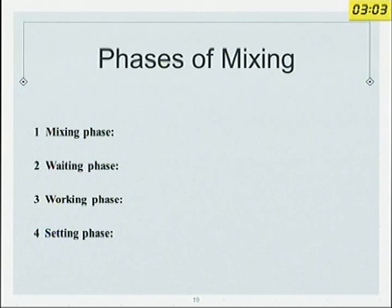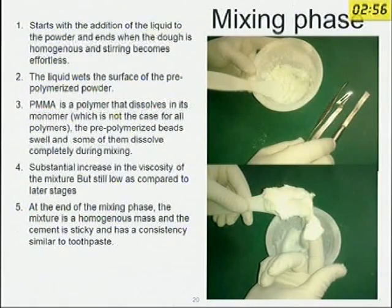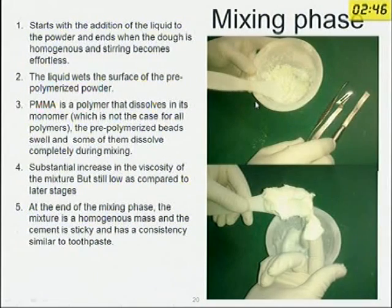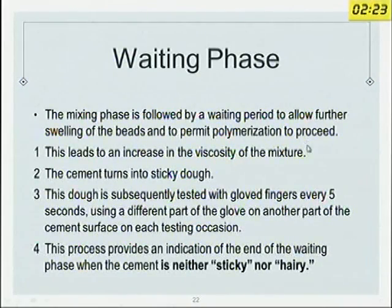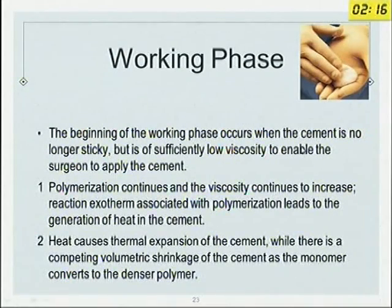After mixing, there are four phases: the mixing phase, the waiting phase, the working phase, and the setting phase. In the mixing phase, after adding liquid to powder, it wets the pre-polymerized powder and there is a substantial increase in viscosity, though it remains low compared to later stages. The mixture looks like toothpaste. Then comes the waiting phase — you just wait, viscosity increases, and it turns into a sticky dough. You pick it up and feel how sticky it is. The end of the waiting period is when the cement is neither sticky nor hairy and does not stick to your unpowdered gloves.